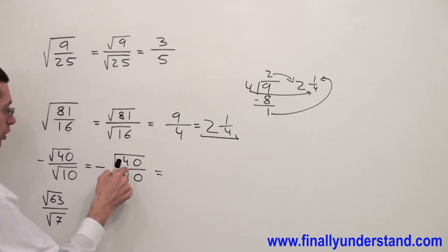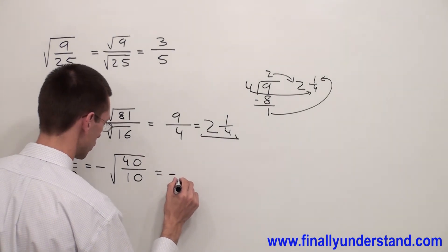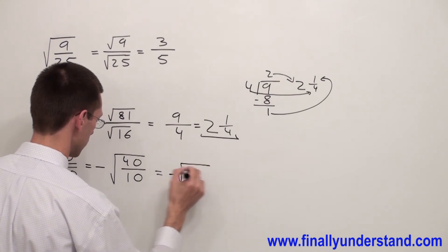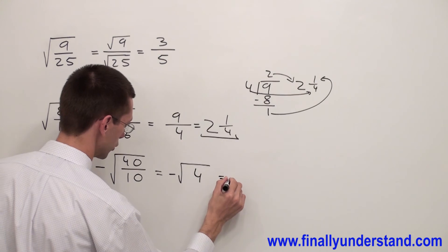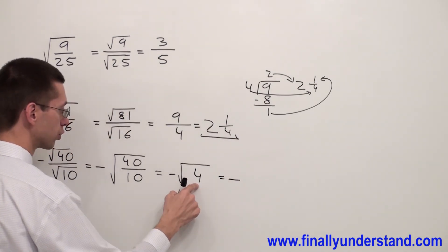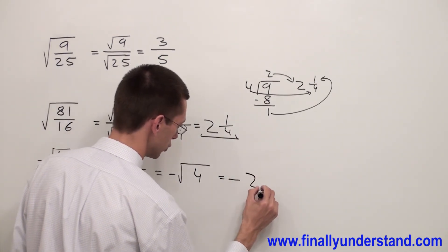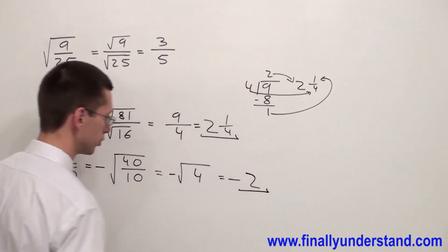I'm going to reduce this fraction first. I'm going to have minus, and 40 divided by 10 gives me 4. I'm going to copy down negative. Square root of 4 equals 2. This is the solution to my problem.